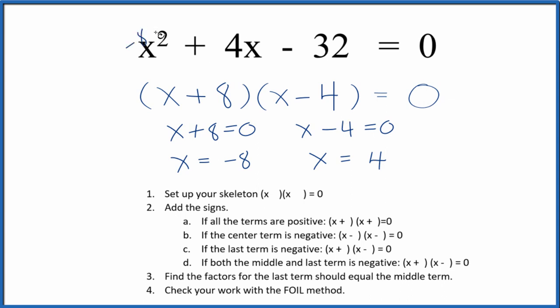If you put negative 8 in for x, you do the math, all of this will equal 0. Likewise, if you put 4 in for x and you do the math, all of this will equal 0.